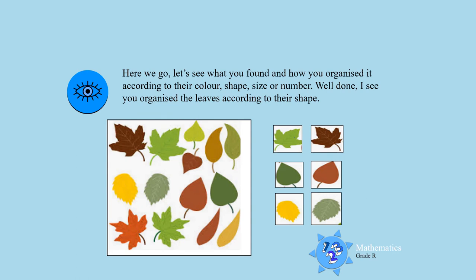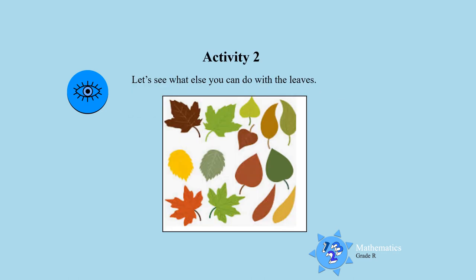Here we go! Let's see what you found around the house and how you organized it according to their color, their shape, their size or their number. Well done — I see you organized the leaves according to their shape. That's very very good. Well done, boys and girls! Activity two: let's see what else you can do with the leaves.